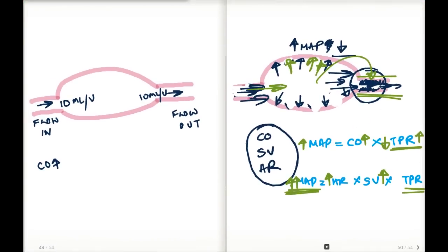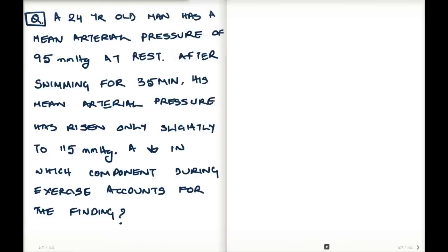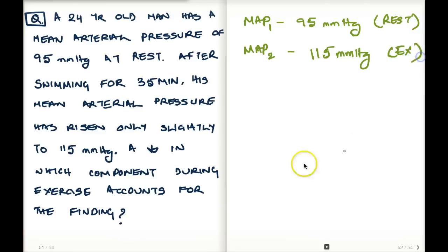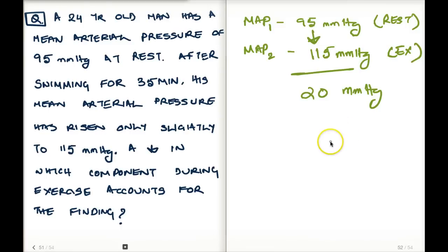Let's do a practice question. A 24-year-old man has a mean arterial pressure of 95 mmHg at rest. After swimming for 35 minutes, his mean arterial pressure has risen only slightly to 115 mmHg — an increase of about 20 mmHg. The question asks: a decrease in which component during exercise accounts for this finding? In other words, what decreased to limit how much MAP rose despite vigorous exercise?